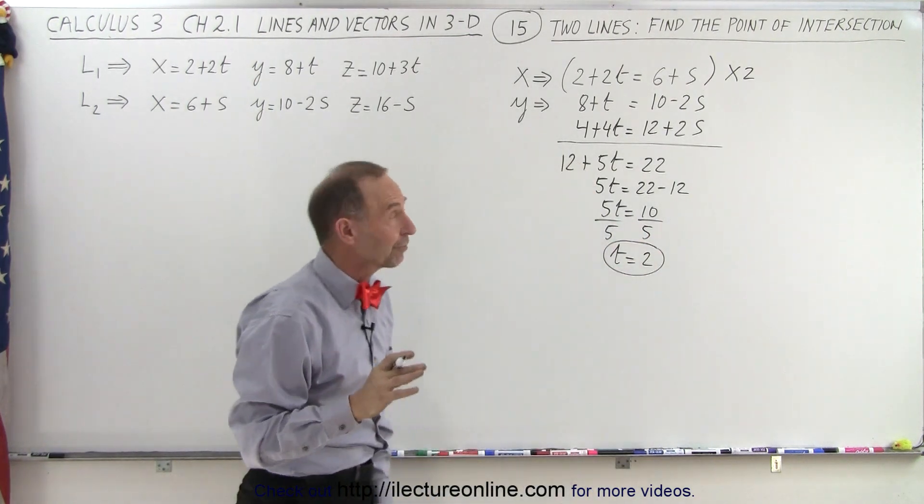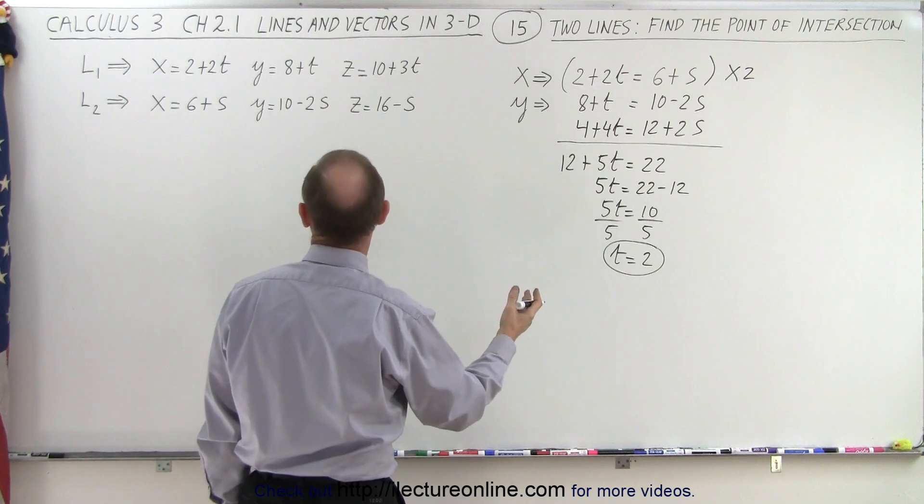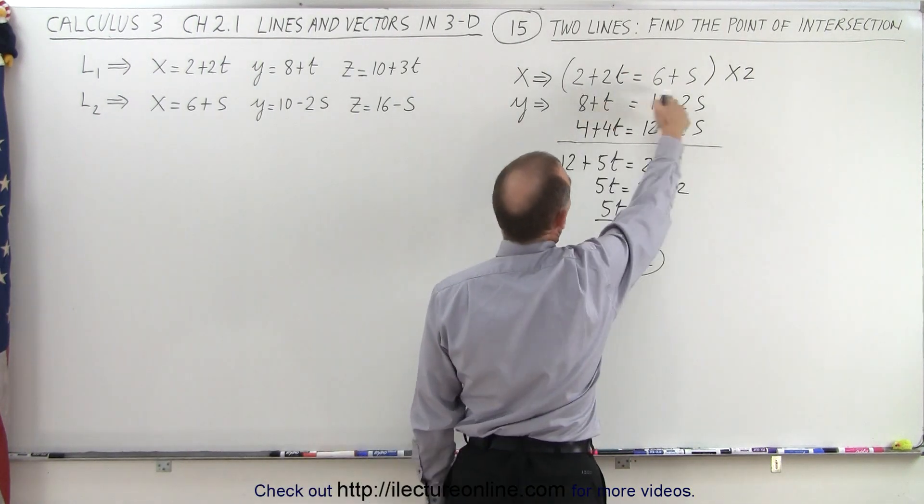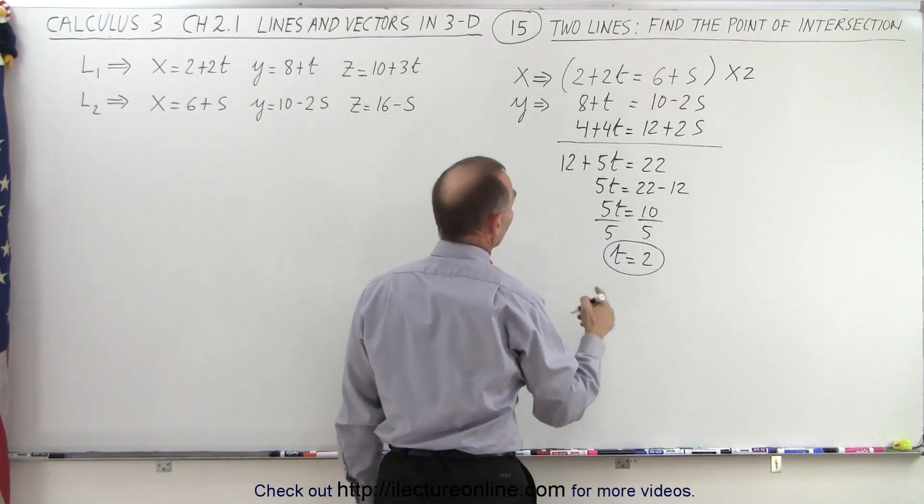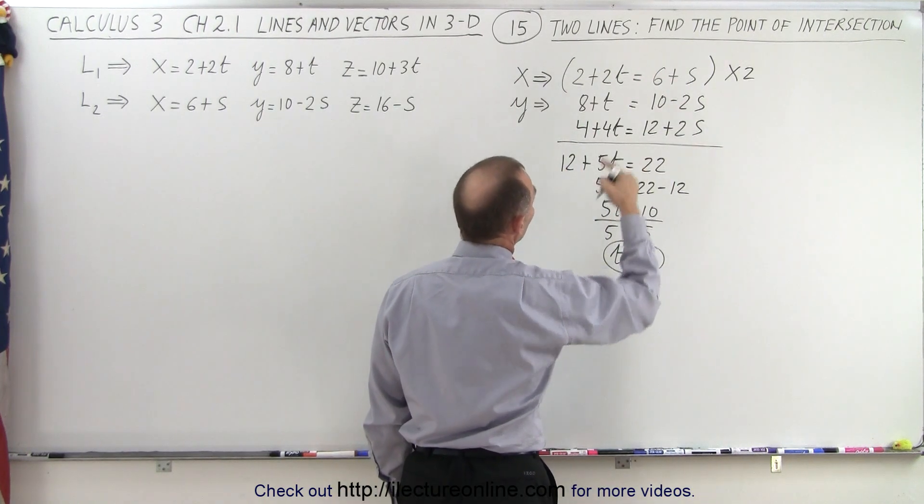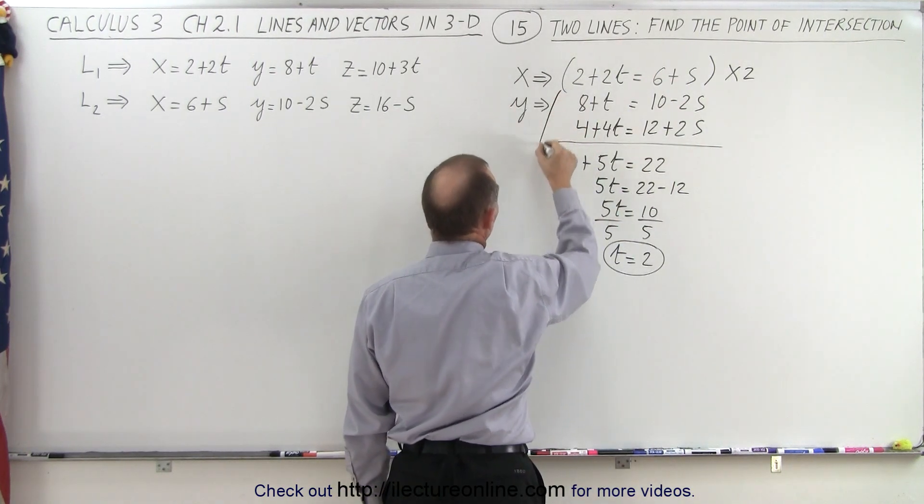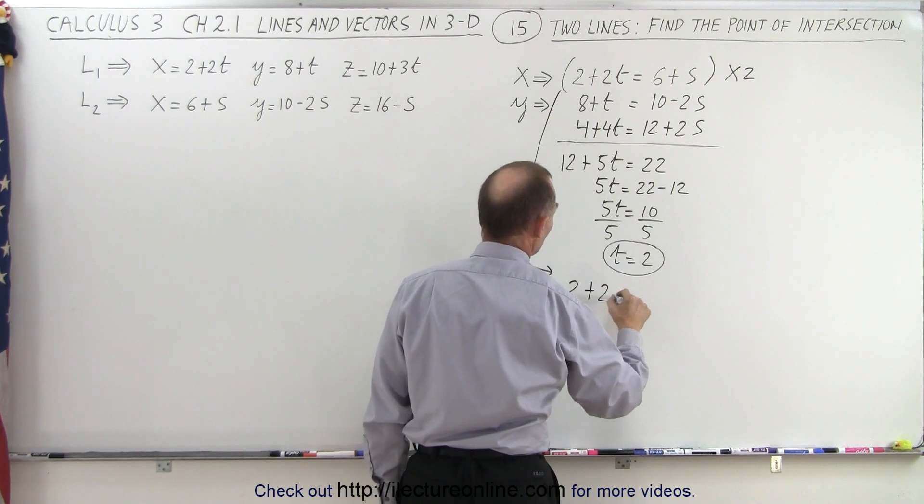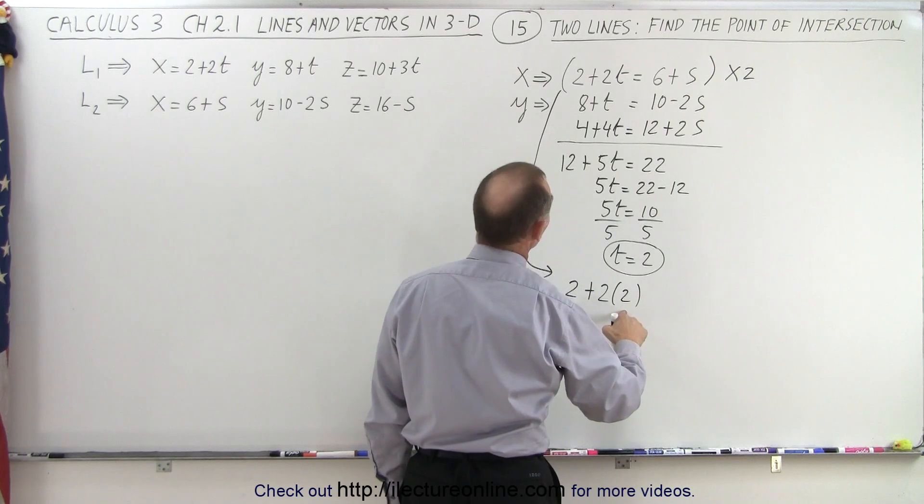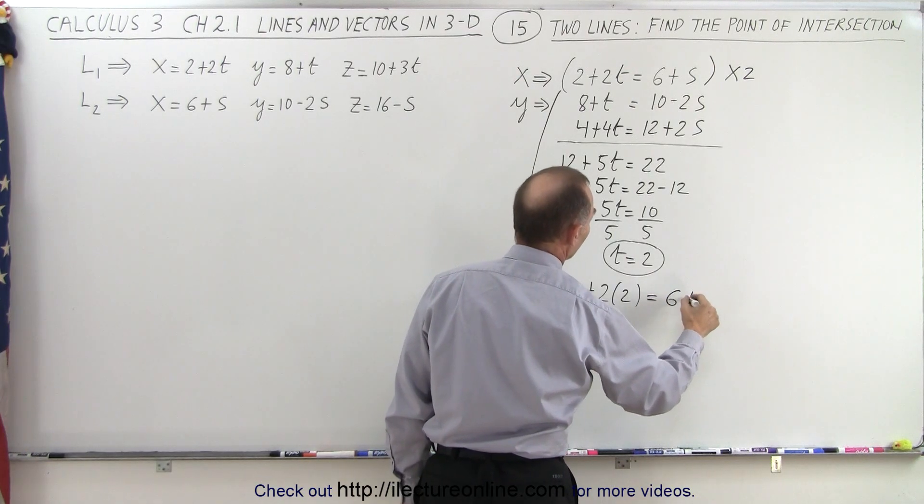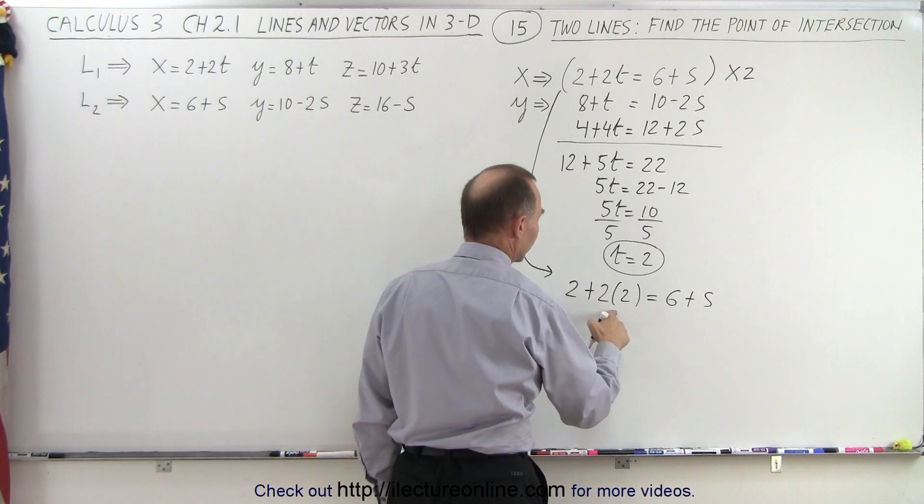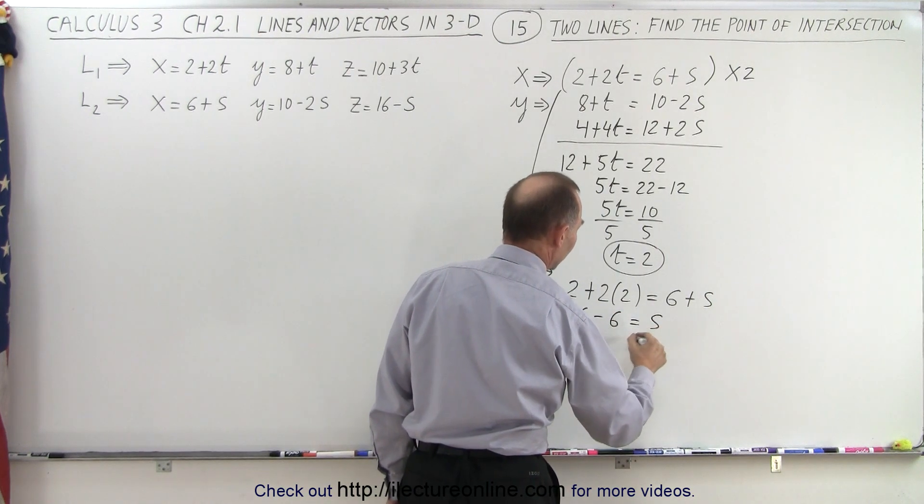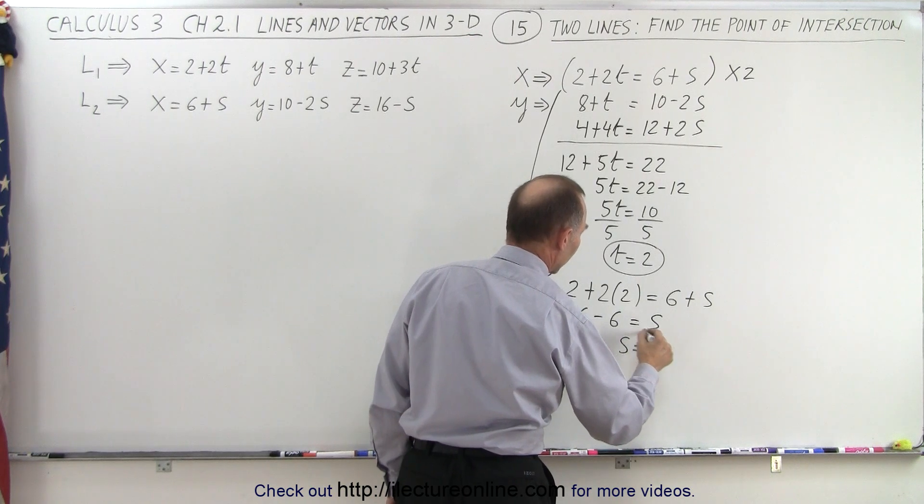Now that we have a value for t, we can plug that into one of our equations to get the value for s. So let's take our first equation and plug in 2 for t and solve for s. So we take this equation and go 2 plus 2 times 2, because t is equal to 2, is equal to 6 plus s. So that gives us 2 plus 4, which is 6, bring the 6 across, minus 6 equals s, or s is equal to 0.